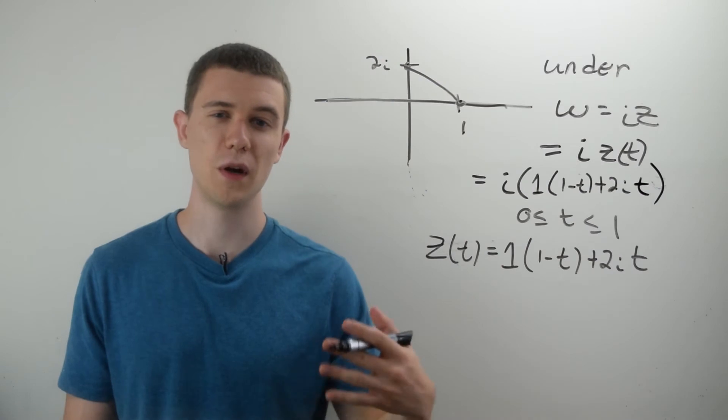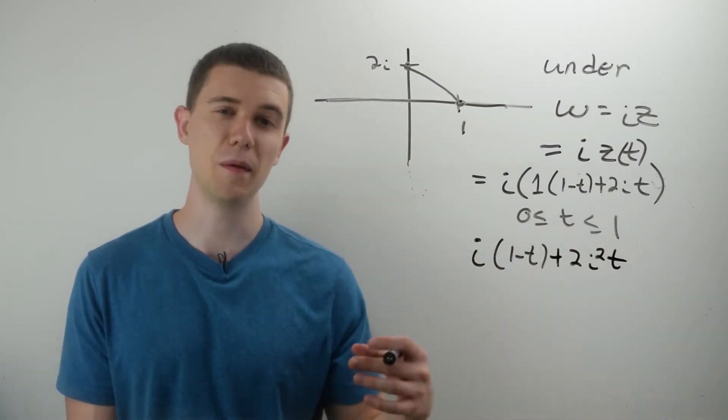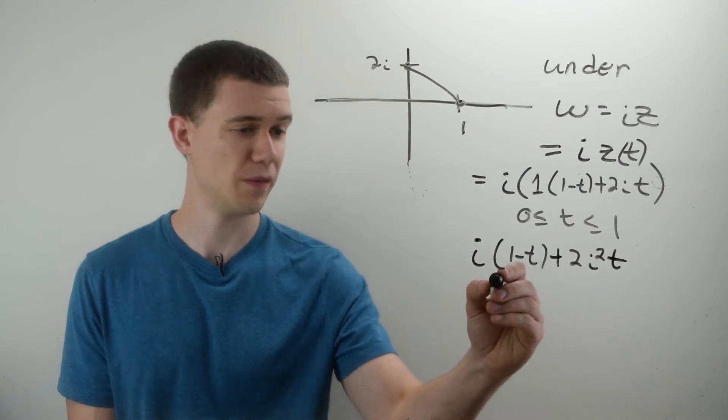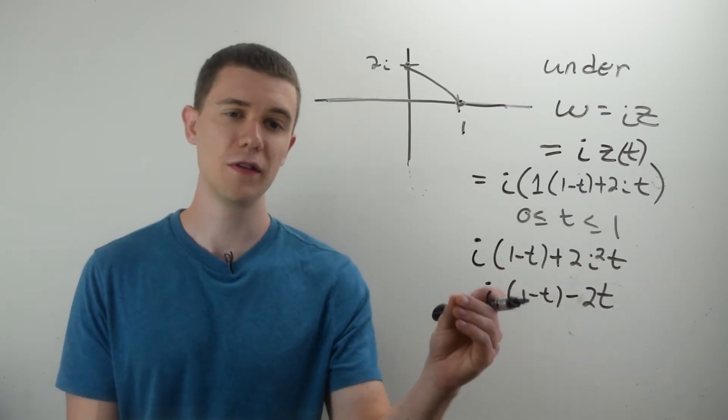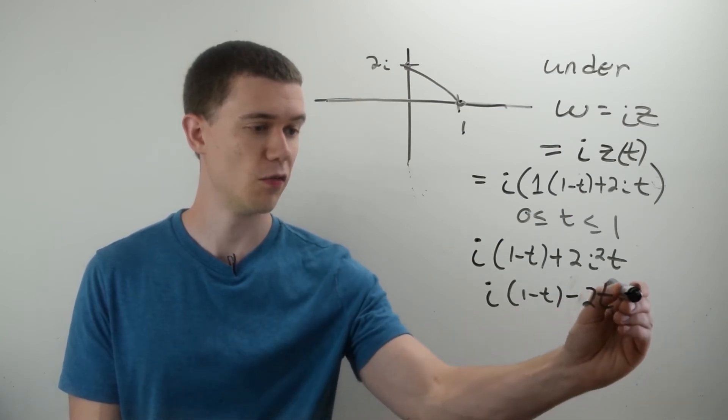Really, I'm just multiplying this whole thing by i, and keeping in mind that i squared is negative 1. So after this substitution, what we have is this expression for W.